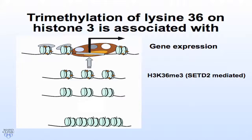Traditionally, histone 3-lysine 36 trimethylation is associated with open chromatin. Normally our chromatin is compacted, but in the presence of gene expression, there is opening or sliding of the nucleosome units so that the transcriptional machinery can access gene promoters to promote gene expression.